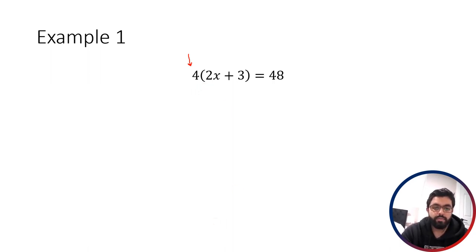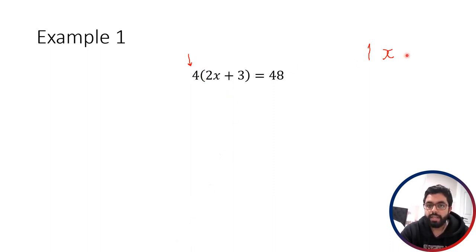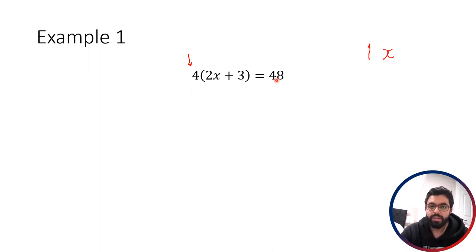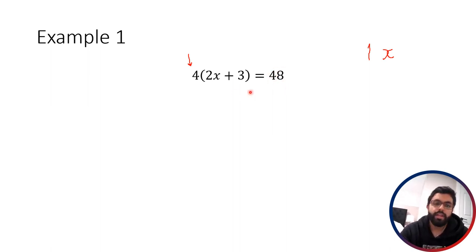Just like when we write x without any number in front of it, that means the same as 1 times x. You don't have to write in the multiplication sign if you've got something in brackets. Obviously if you have two numbers not in brackets, you would have to write the multiplication sign, because 4 times 8 without anything in between just looks like 48. But this 4 is multiplied by the whole thing in brackets.